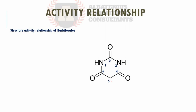When it comes to barbiturate SAR, we have three different sites for modifications. The first is the C5 position, the second substitution is on the nitrogen atoms N1 and N3, and the third site is the oxygen atoms. Substitution on C5 is essential for activity, so all active products must have two substitutions there. If a structure has only one substitution on C5, the product is inactive.